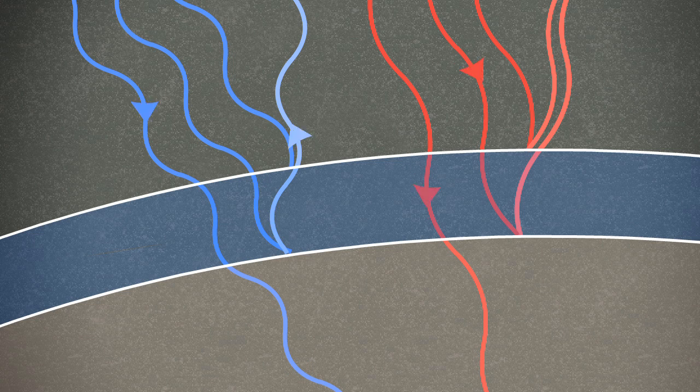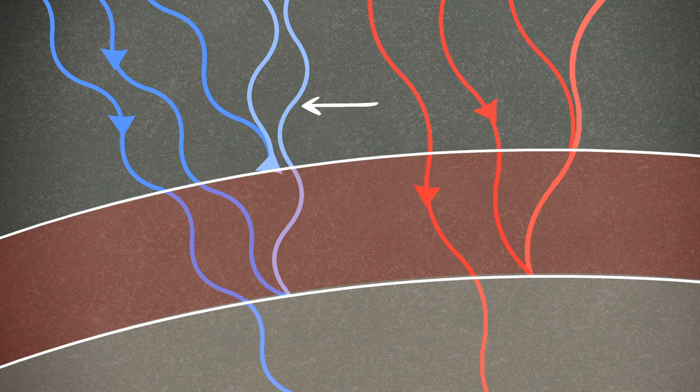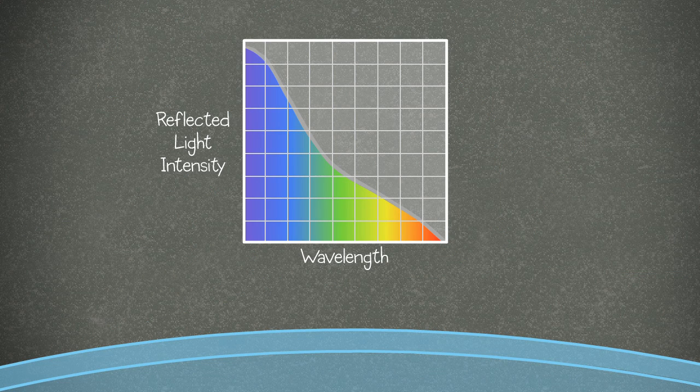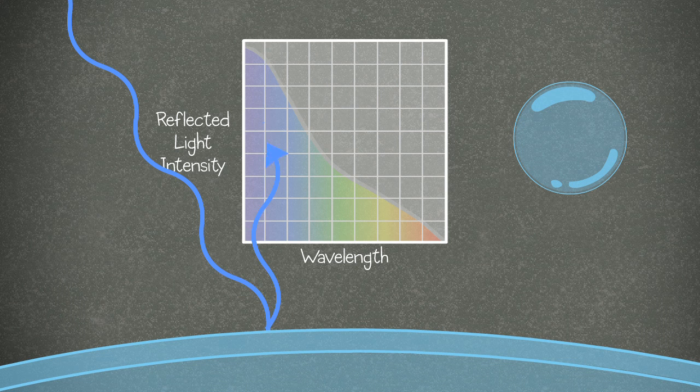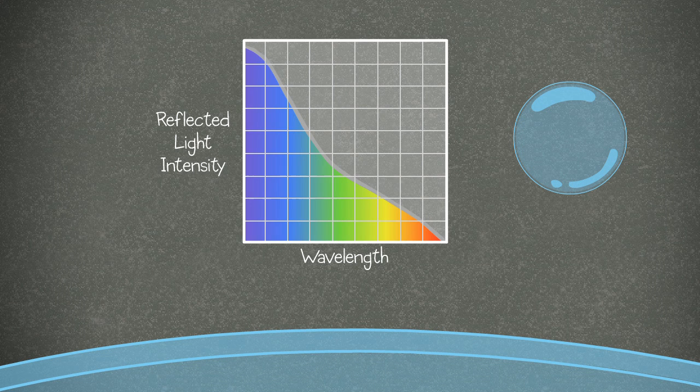However, if the bubble was thicker, then the red light waves would line up, and the blue light waves would cancel each other out, making the bubble appear red. We can plot how much light is reflected for the entire color spectrum. This bubble has lots of blue, some green, and very little red, so it appears greenish blue.